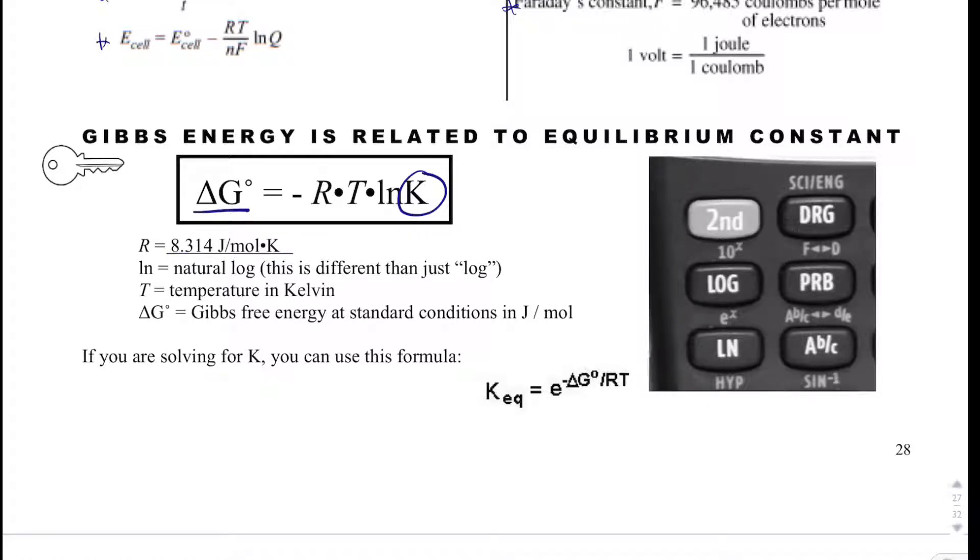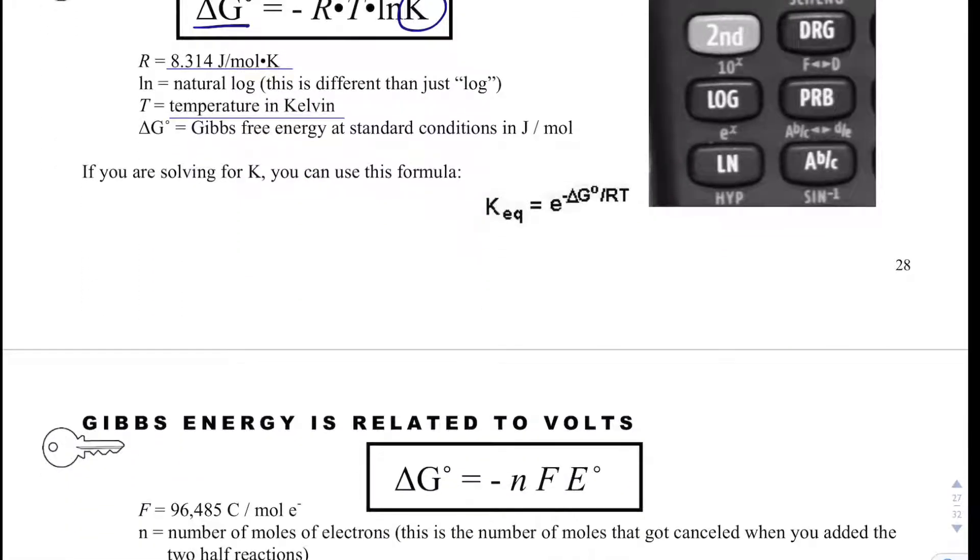R is 8.314 joules per mole Kelvin. The temperature is always going to be in Kelvin. We'll talk about how you solve for K, but this would be a formula to know if you struggle with natural logs because Algebra 2 hasn't covered them yet, most likely.